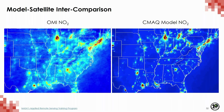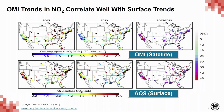Satellite observations of NO2 have also been used to evaluate three-dimensional chemistry transport models. Here you can see that the CMAQ model is overestimating NO2 over sources and urban areas, but underestimating NO2 in more rural areas. Because of the short lifetime, large gradients, and high concentration in the boundary layer, surface trends in NO2 tend to correlate very well with trends in the entire tropospheric column. The plots show surface measurements of NO2 as well as co-located tropospheric column NO2 from OMI, and the trends in the two datasets show very good agreement.